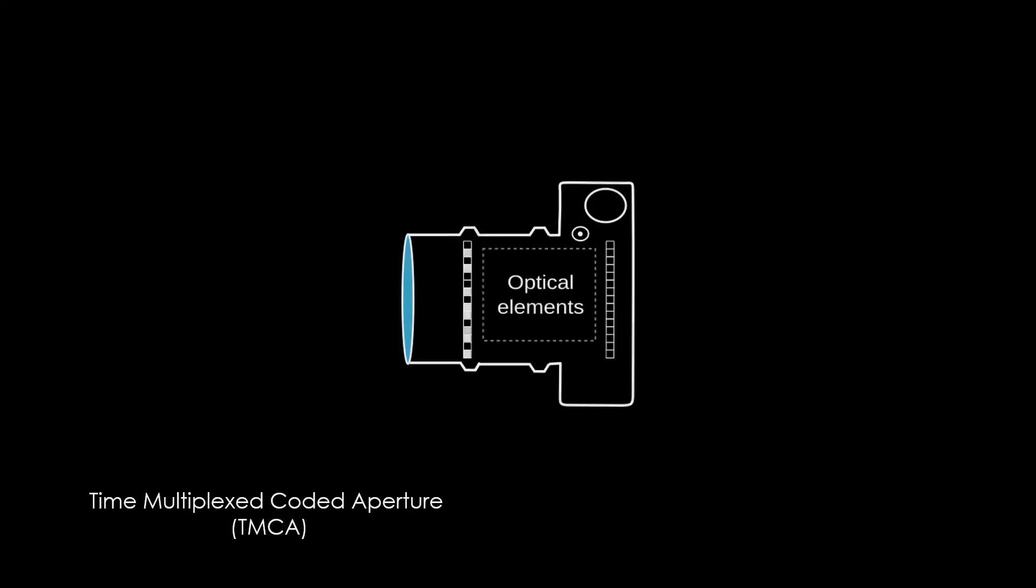In this work, we propose time-multiplexed coded apertures, or TMCA, a new type of codification. TMCA consists of a coded aperture that varies in time during the exposure of our snapshot. And we add a spatially varying coded exposure to it.